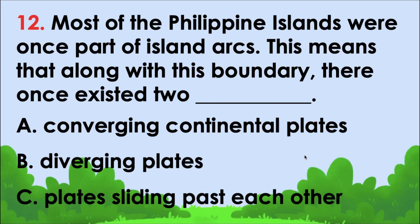Most of the Philippine islands were once part of island arcs. This means that along with this boundary, there once existed blank. The correct answer — converging oceanic plates.